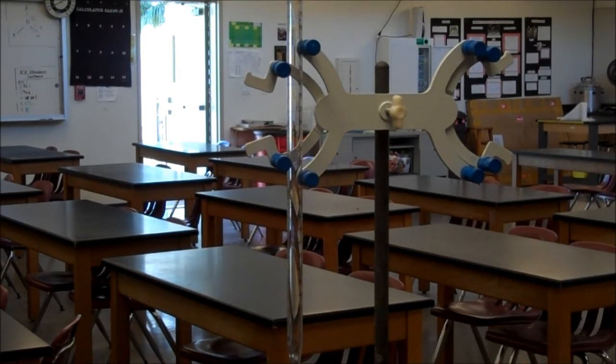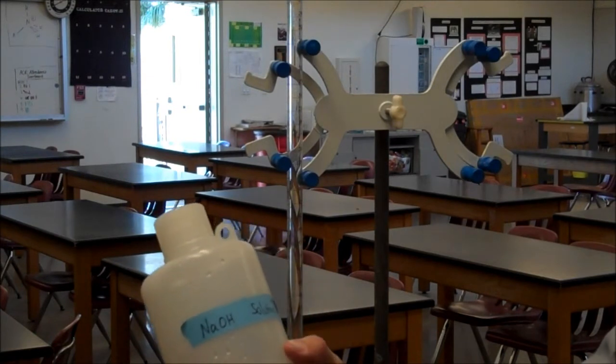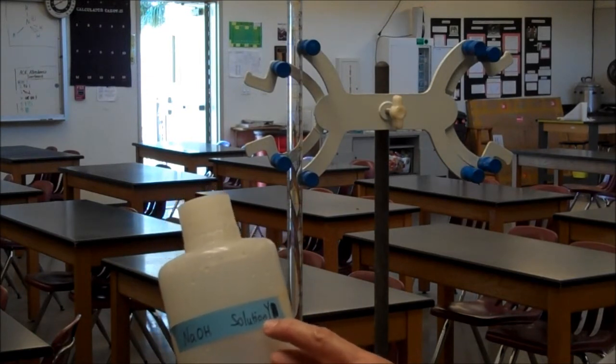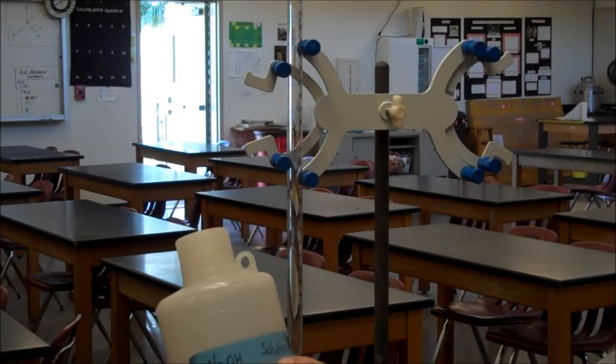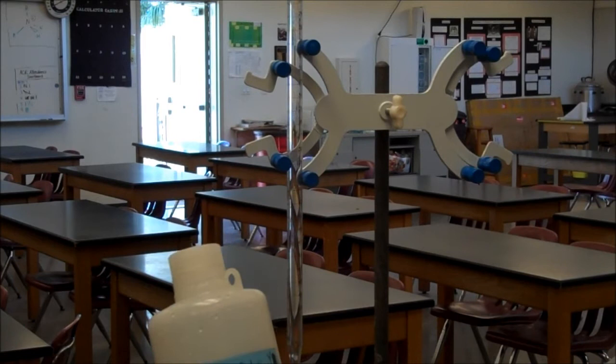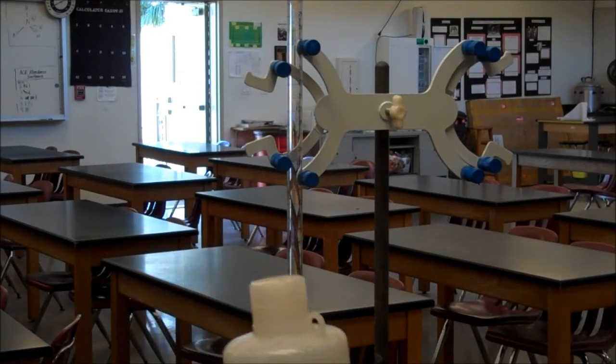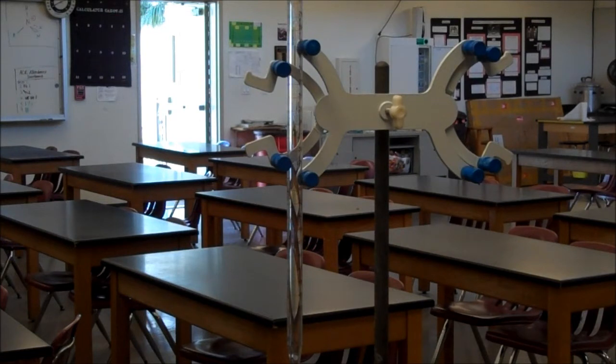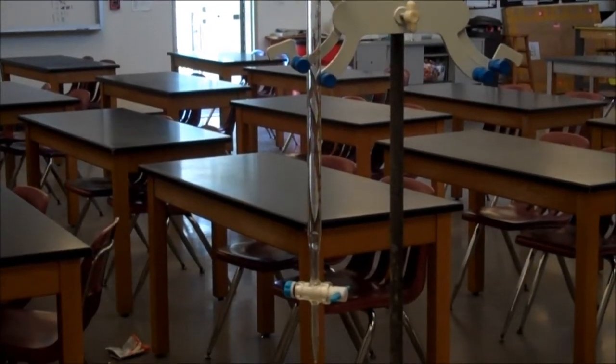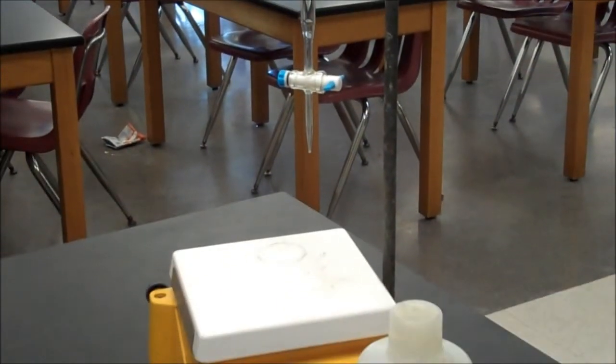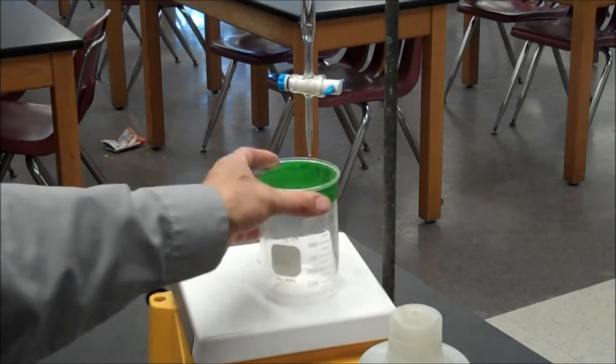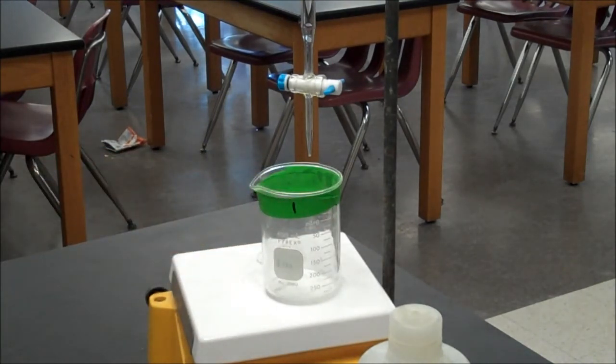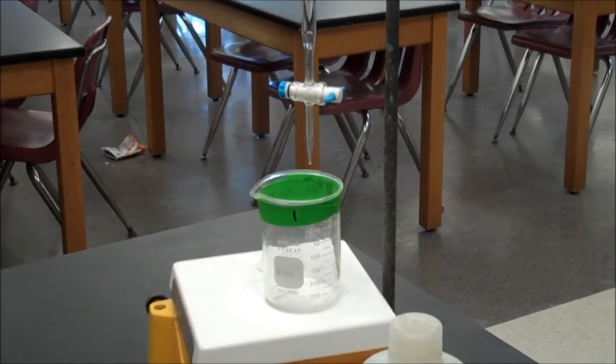I'm now going to load the burette with some base. You're going to have a solution, either solution X, Y, or Z. It's sodium hydroxide, so it's a strong base solution, but you won't know the concentration. I made them all different. To fill the burette is tricky. One of the precautions I ask you to take is that at the bottom, you want to put a waste beaker, not your precious beaker with the acid solution, just a garbage beaker in case you spill. It's very common that you spill. So there's my waste beaker.